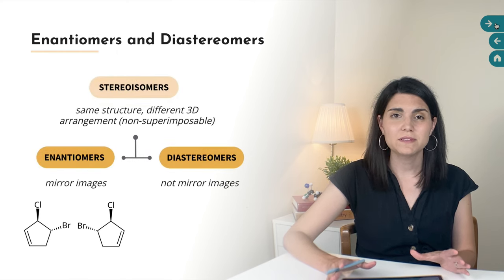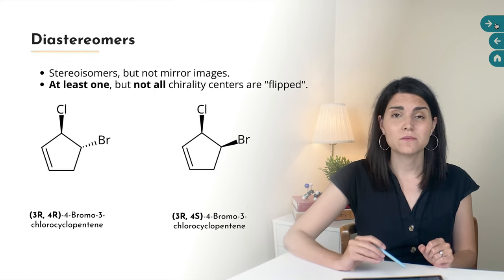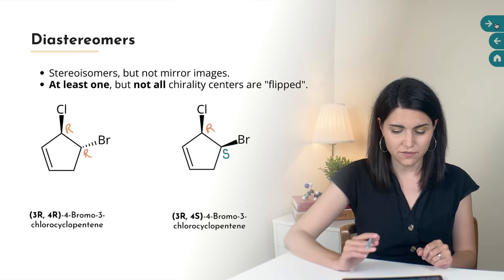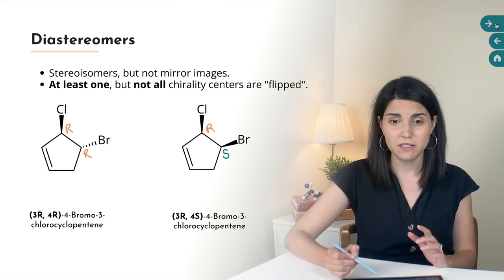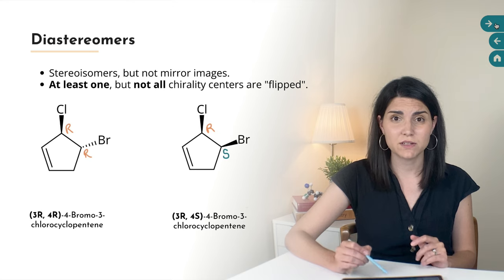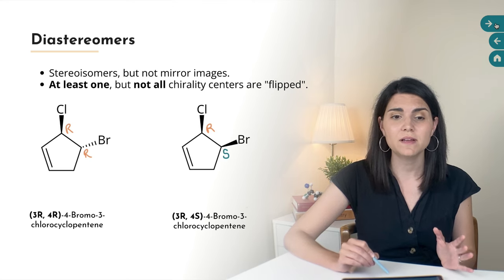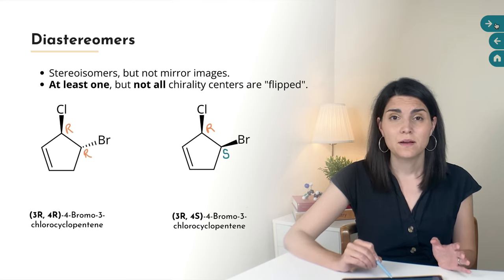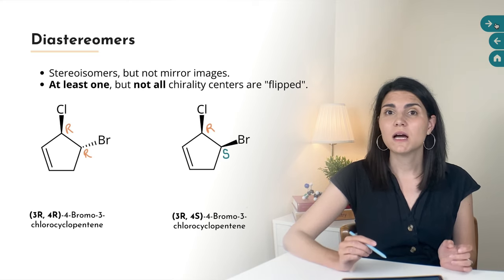We can also have a set of molecules that are stereoisomers of one another, but they are not mirror images of one another. For example, if we look at our original molecule, that 3R4R isomer, and compare it with the RS isomer — the 3R4S-4-bromo-3-chlorocyclopentene — the only change is that on the second one, the bromine has changed from being on a dash to being on a wedge. So the configuration of the chirality center it's attached to changed from R to S. These two molecules are stereoisomers with the same formula and the same name, but they aren't mirror images of one another. When we have stereoisomers that are not mirror images, we call them diastereomers.